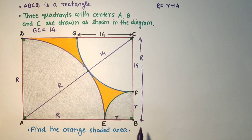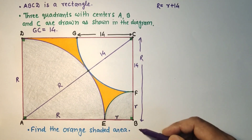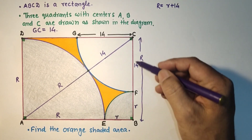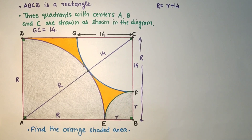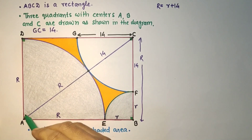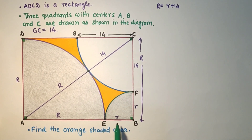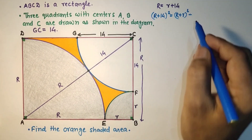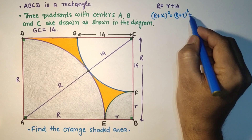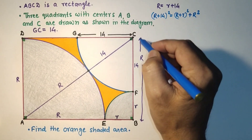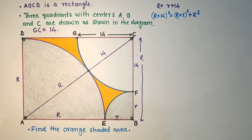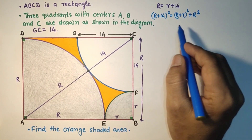Side AB is R + r, and this side is capital R which is equal to r + 14. By using Pythagoras theorem we get: (R + 14)² = (R + r)² + r². And if we simplify it...